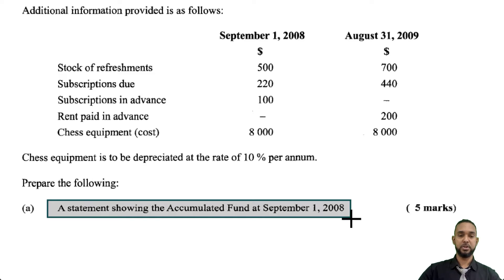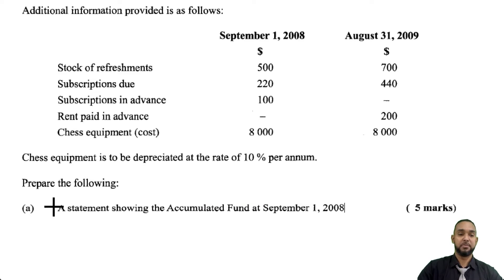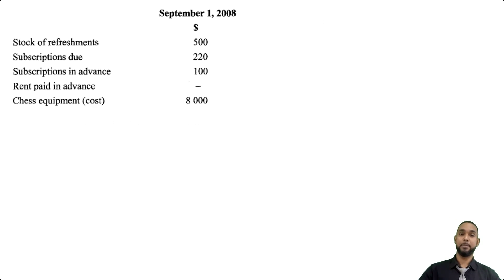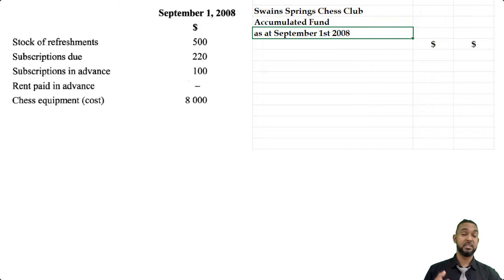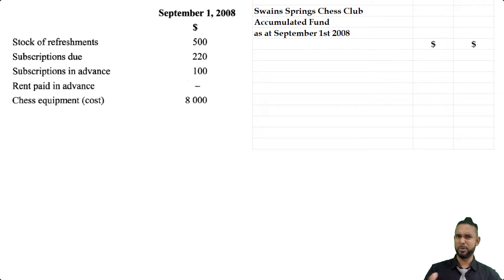The first thing they want us to do is show a statement of the accumulated fund as of September 1st 2008. Accumulated fund is what non-profit organizations call their capital, and capital is simply assets minus liabilities. We'll head this up as Swain Springs Chess Club accumulated fund as of September 1st 2008. Some people call this a statement of affairs — there wouldn't be much difference except in name.